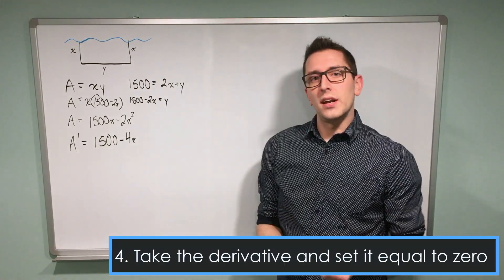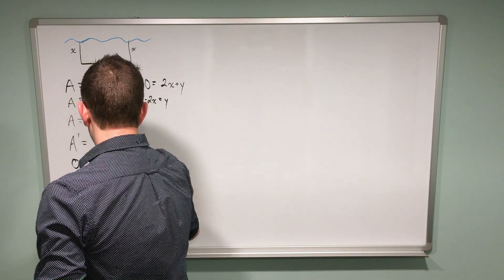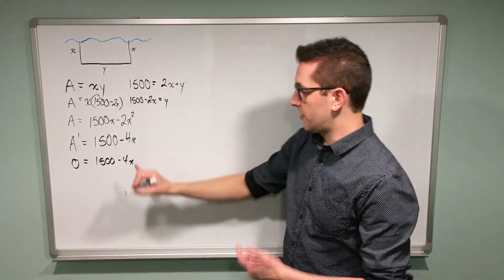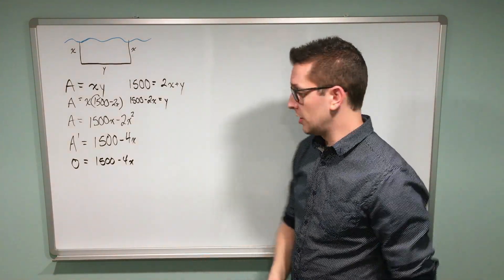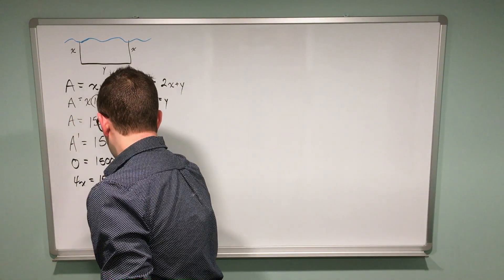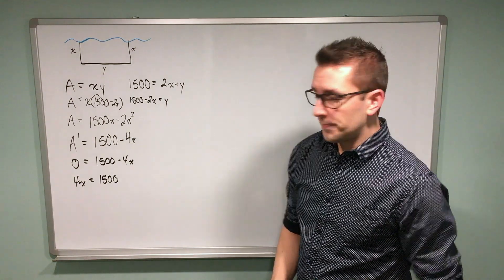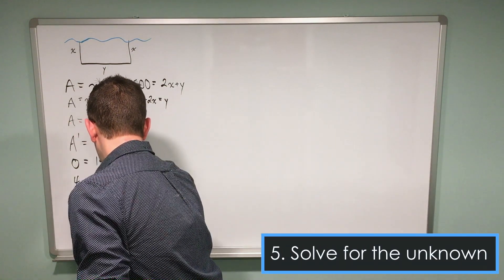I'm going to take this derivative and set it equal to zero. That's going to tell me the location of my maximum. If I solve for x here, I found the location of my maximum on the x axis. I'm going to bring the 4x over to the other side, and I end up with a nice linear equation in terms of x. Dividing 4 on both sides, I end up with x = 375.